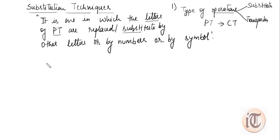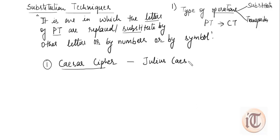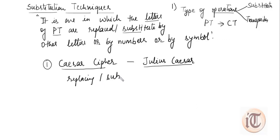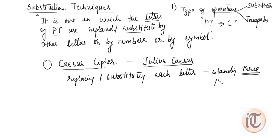The first and most important technique under the substitution category is called Caesar cipher. This is the earliest known use of a substitution cipher and it was developed by Julius Caesar. The Caesar cipher involves replacing or substituting each letter of the alphabet with the letter standing three places further down the alphabet.